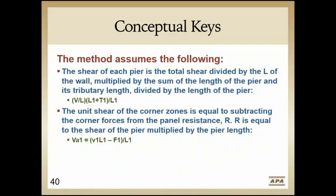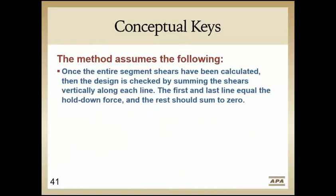The next conceptual key: take that tributary length, add it to the pier you're looking at, multiply that times your shear divided by the length of that pier to calculate the individual pier shear horizontally. The final step is to calculate the shears in all segments of the wall — those corner zones need to be calculated as well, based on the resistance versus the strap force divided by the length of the pier. The best part is that when you're done summing all the shears for the segments, you can check your work: the first and last vertical lines sum to the hold-down force, and all vertical lines in between sum to zero if your math is correct.